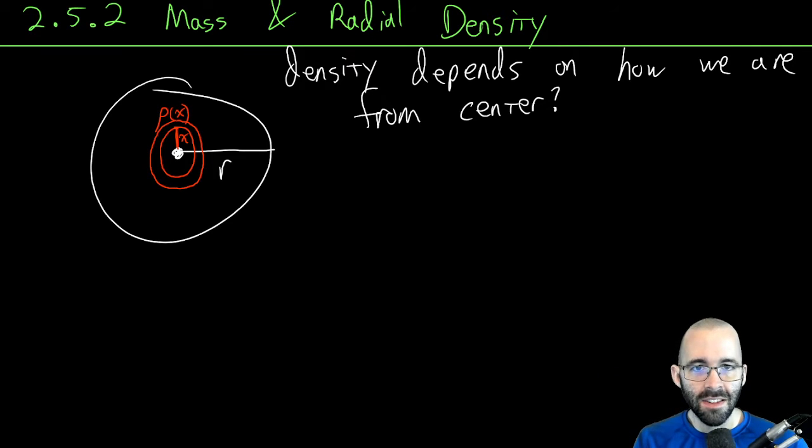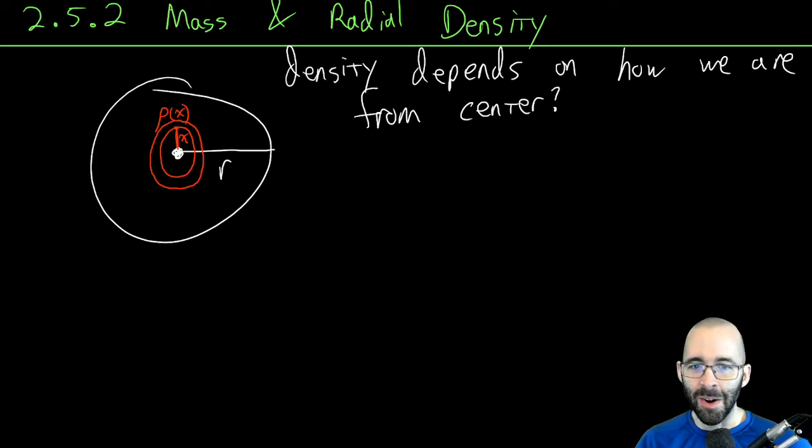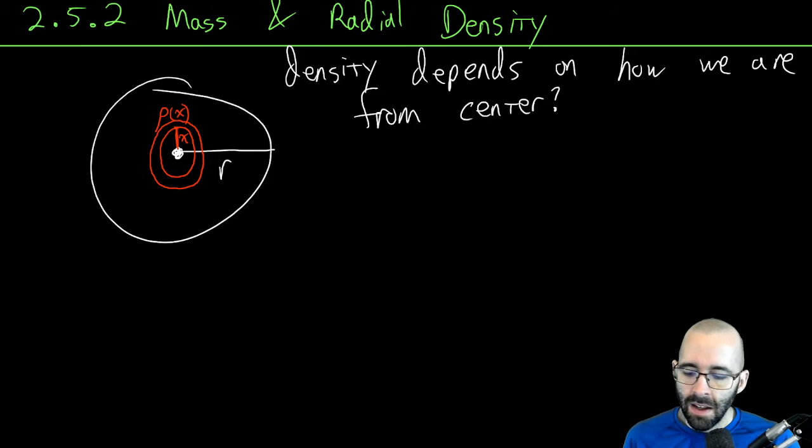The density depends on the radius. Let's divide this into a bunch of tiny little washers. Don't worry, we're not doing the washer method. As long as the density is a continuous function, we can pretend that the density is the same on this tiny little interval.